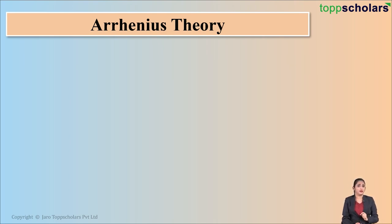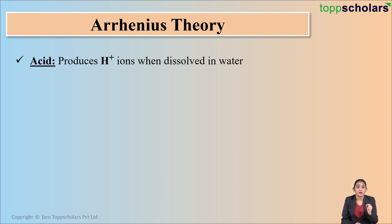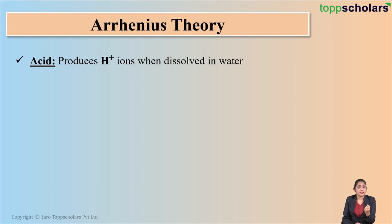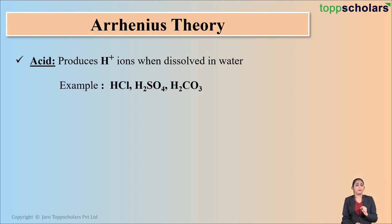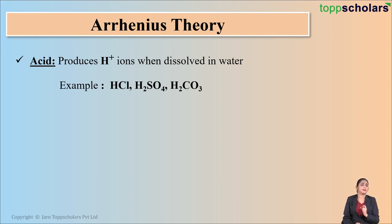According to Arrhenius theory, an acid is a substance which produces H+ ions when dissolved in water. For example, HCl that is hydrochloric acid, H2SO4 that is sulfuric acid, H2CO3 that is carbonic acid — all these three substances on dissolving in water give H+ ions, which means that all these three are acids.